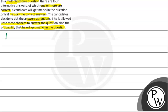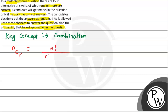So, let's see what the key concept is. We will basically use a combination. The combination formula is: nCr is equal to n factorial divided by r factorial into n minus r factorial.